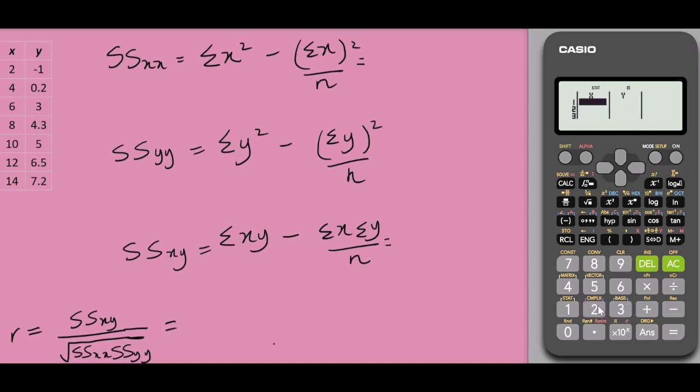We could start to insert the values of the independent and dependent variable. I'm starting with 2 equals to. I would insert the values of x and then the values of y. 4 equals to 6, 8, 10, 12, and 14.